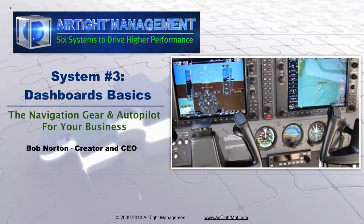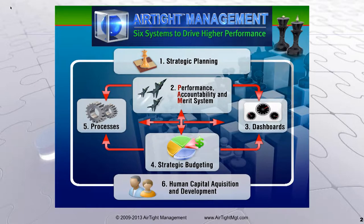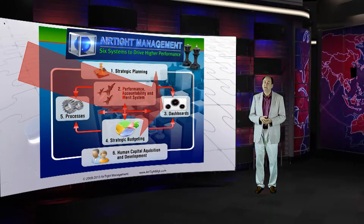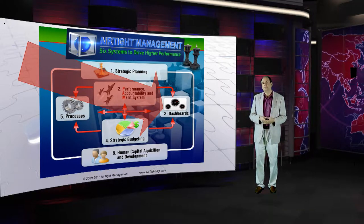There are about five modules on dashboards that you'll want to dig into, depending on the level of help that you might get from experts and how much of this you're going to do on your own. Remember that Airtight is essentially a complete operating system for any company. And if you use all six of these systems, it's very likely that your company can dominate its market, but you want to introduce one at a time as your company grows. Today, we're only going to focus on System 3 dashboards, which is about metrics and KPIs, or key performance indicators.